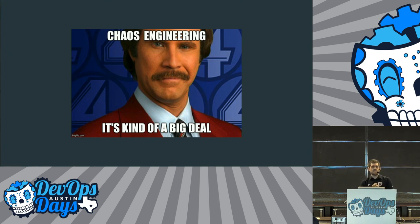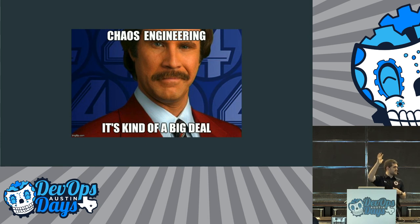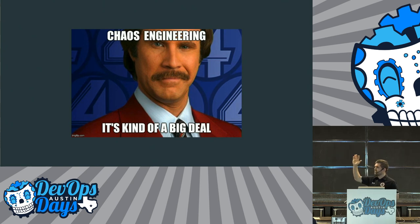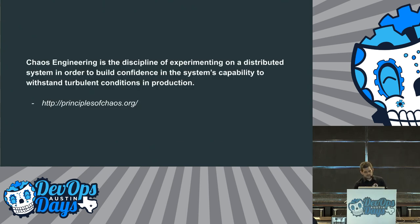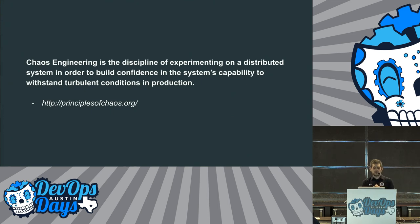But I'm curious — how many people today actively do chaos engineering? Anybody actively run it? Anybody heard about it and is interested in starting? And how many people is this brand new? So here's a working definition we can start with: Chaos engineering is the discipline of experimenting on a distributed system in order to build confidence in the system's capability to withstand turbulent conditions in production.